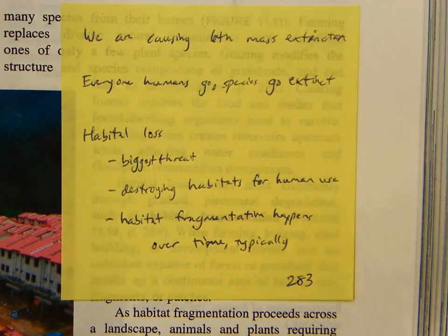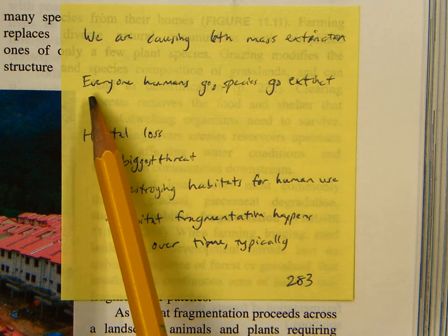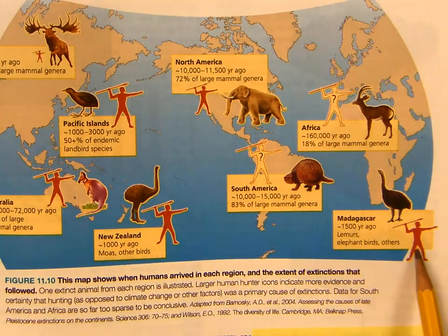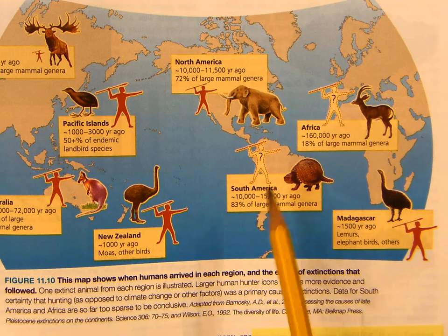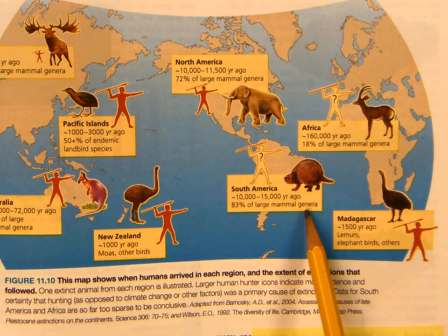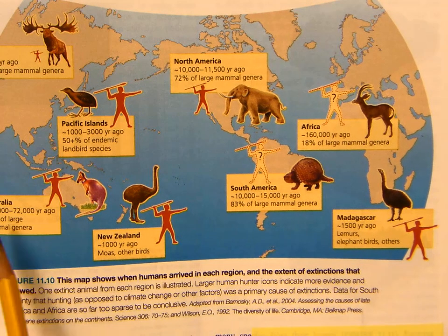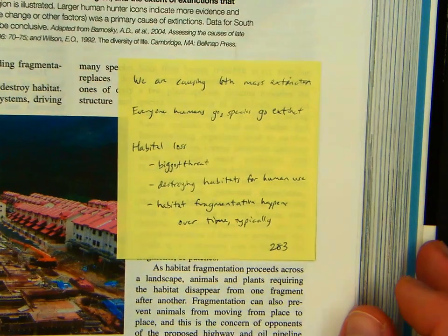We are causing the sixth mass extinction event. Everywhere humans go, species go extinct — and that's what this section is showing. Humans showed up in Madagascar about 1,500 years ago and the lemurs, elephant birds, and others went extinct. In South America, we showed up about 10,000 to 15,000 years ago and 83% of the large mammal genera started going away. In New Zealand, we showed up 1,000 years ago and killed some things; in Australia, 44% of large mammals disappeared. Basically, wherever we show up, things start going extinct. Habitat loss is the biggest threat.